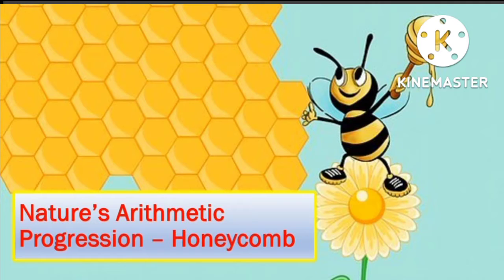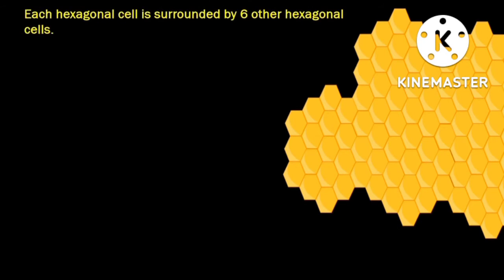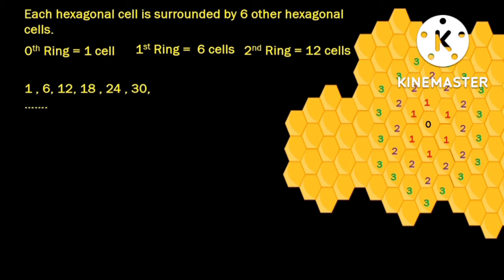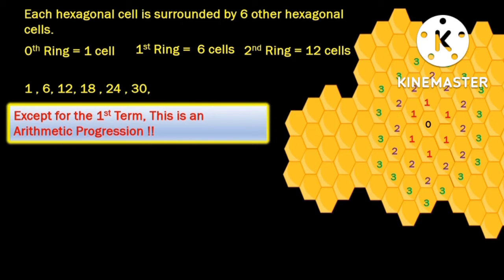Did you know that nature uses arithmetic progression to design honeycombs? The bees start making the honeycomb with a single hexagonal cell and form ring after ring of cells around it. If the zeroth ring has one cell, the first ring is made up of 6 cells, the second ring 12 cells, the third ring 18 cells, and so on. Amazingly, the number of cells in each successive ring form an arithmetic progression, except for the zeroth ring.